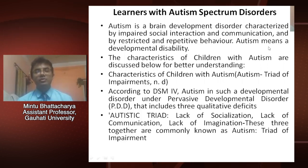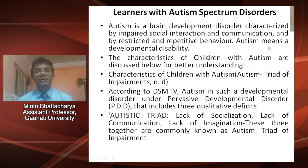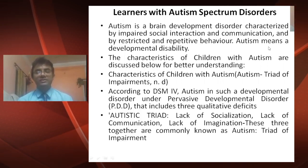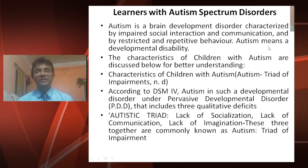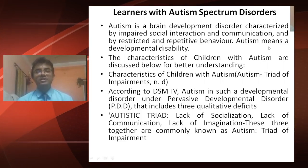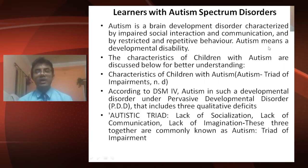According to DSM, autism is classified as a developmental disorder under pervasive developmental disorder (PDD). It includes three qualitative impairments: lack of socialization, lack of communication, and lack of imagination. These three together are commonly known as the autism triad of impairment.